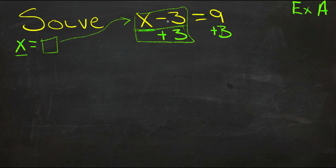So now if we do this, we can cancel out this negative 3 with the positive 3, because that ends up being 0, and that leaves just x on the one side. On the other side of the equal sign now, we have 9 plus 3, and that's 12.